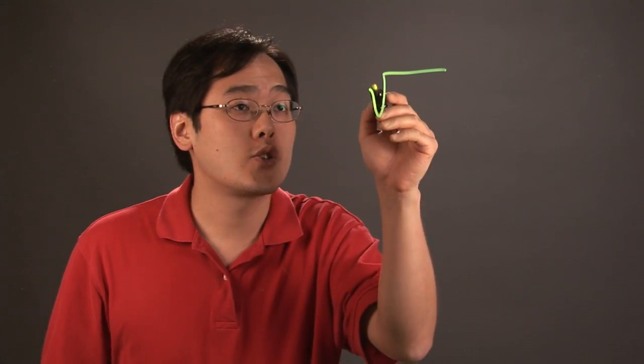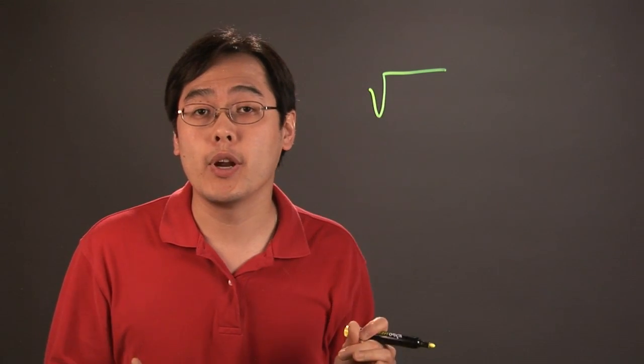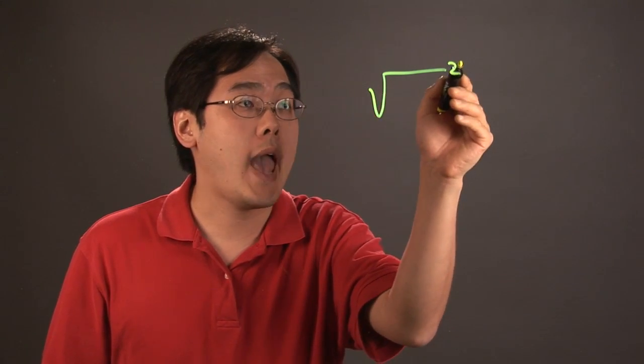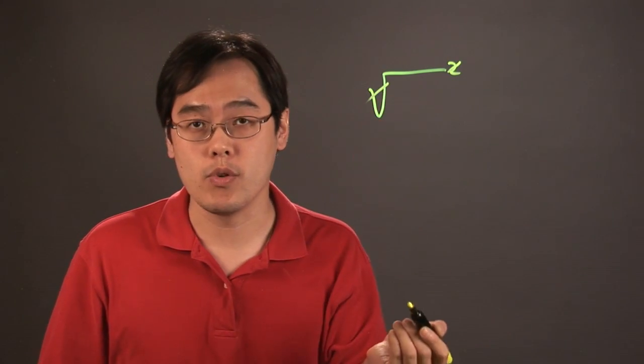So actually, square root and squares being opposite operations, to cancel out a square root, you would just square the expression, and what happens is that that will cancel the square root.